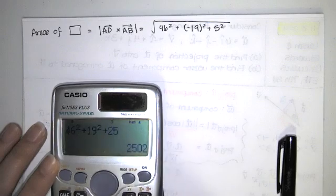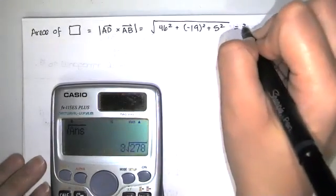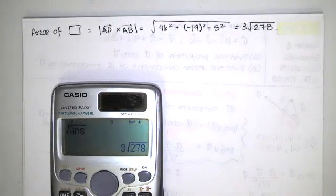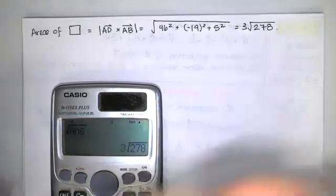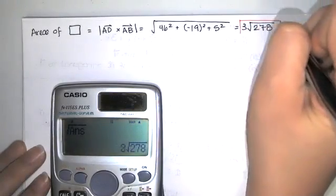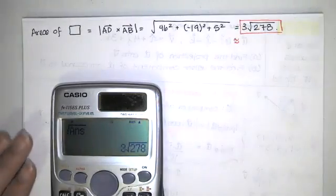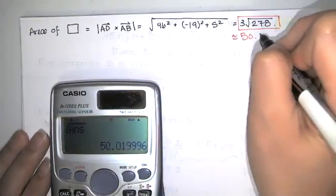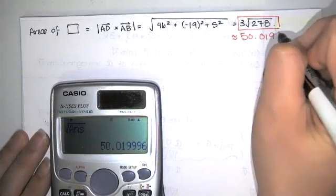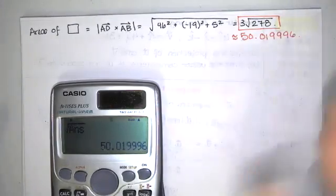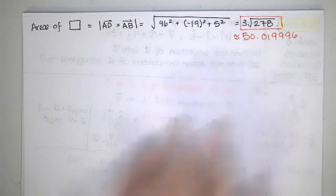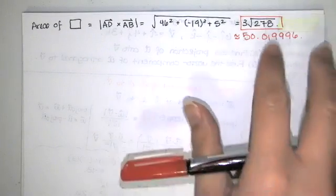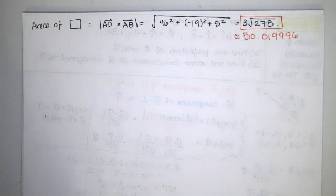So that's our area, and I'll just use a calculator for the arithmetic. 46 squared plus 19 squared plus 5 squared, square root of the answer is equal to 3 times the square root of 278. And that's my exact answer. WebAssign probably wants the exact answer, but let's see what it is if we want a decimal approximation. That's approximately 50.019996. I'm not sure how many decimals they would want us to round to. We'd have to look at the fine print in WebAssign to see if they want this, or if they want some rounded version of this.